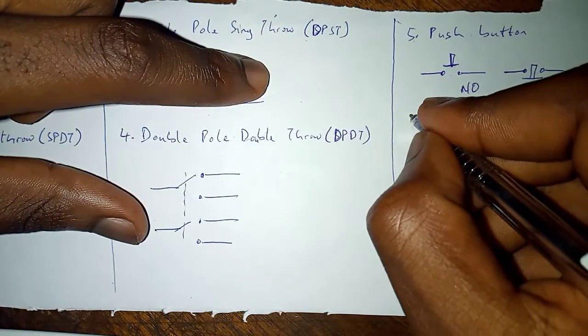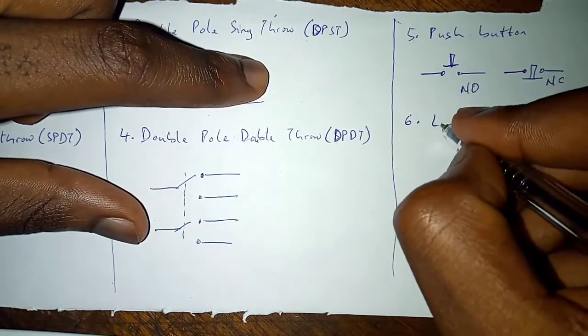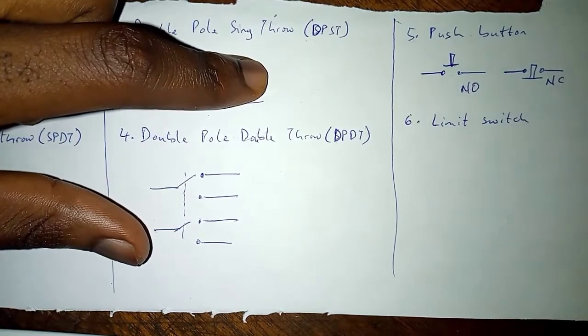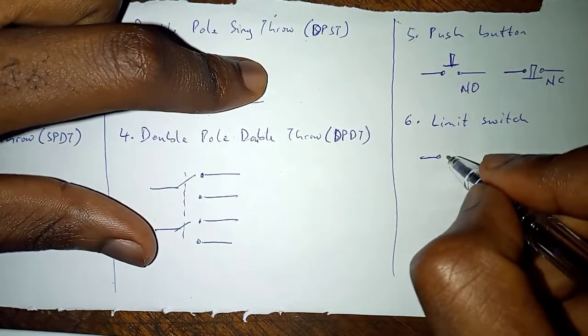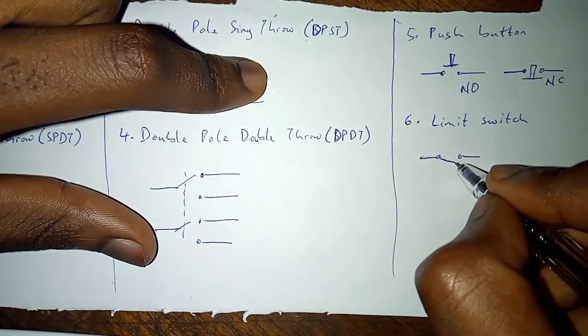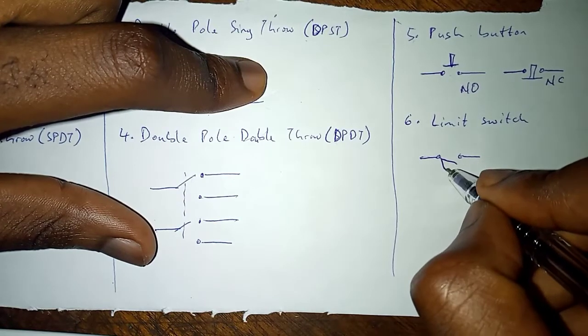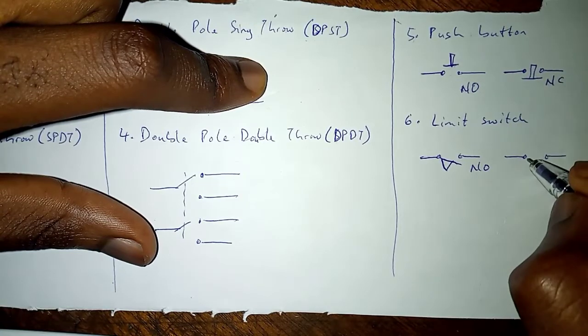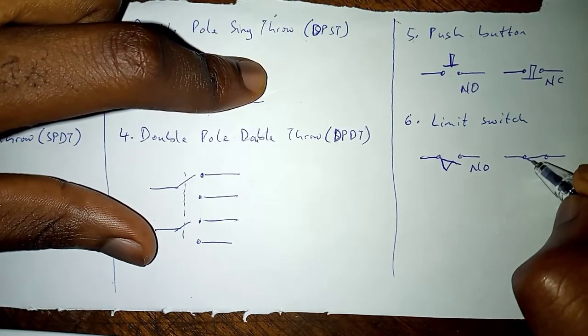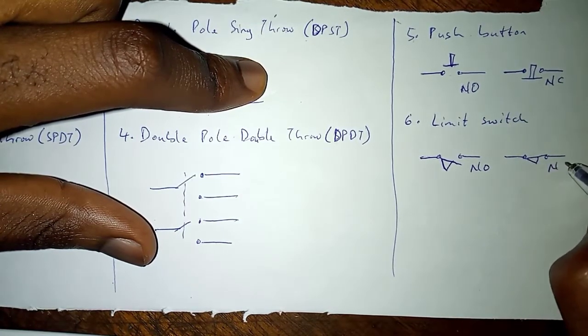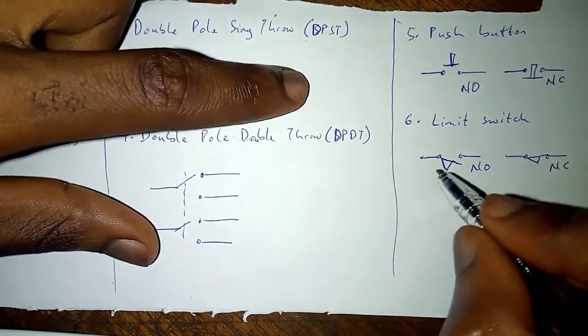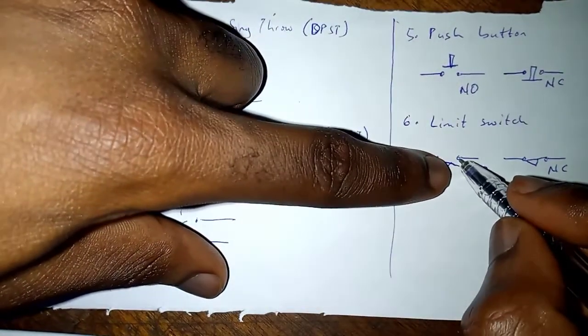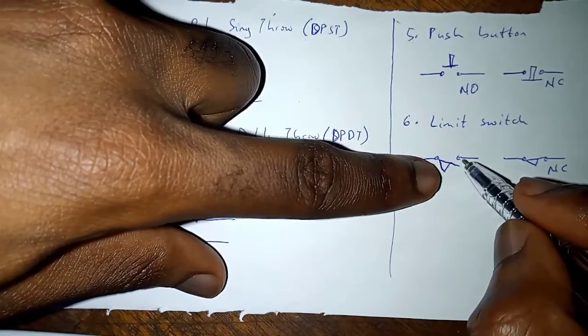Then we have a limit switch which is operated by a mechanical device. It can be normally open or normally closed. So when a mechanical device touches this switch, it pushes it up to close.